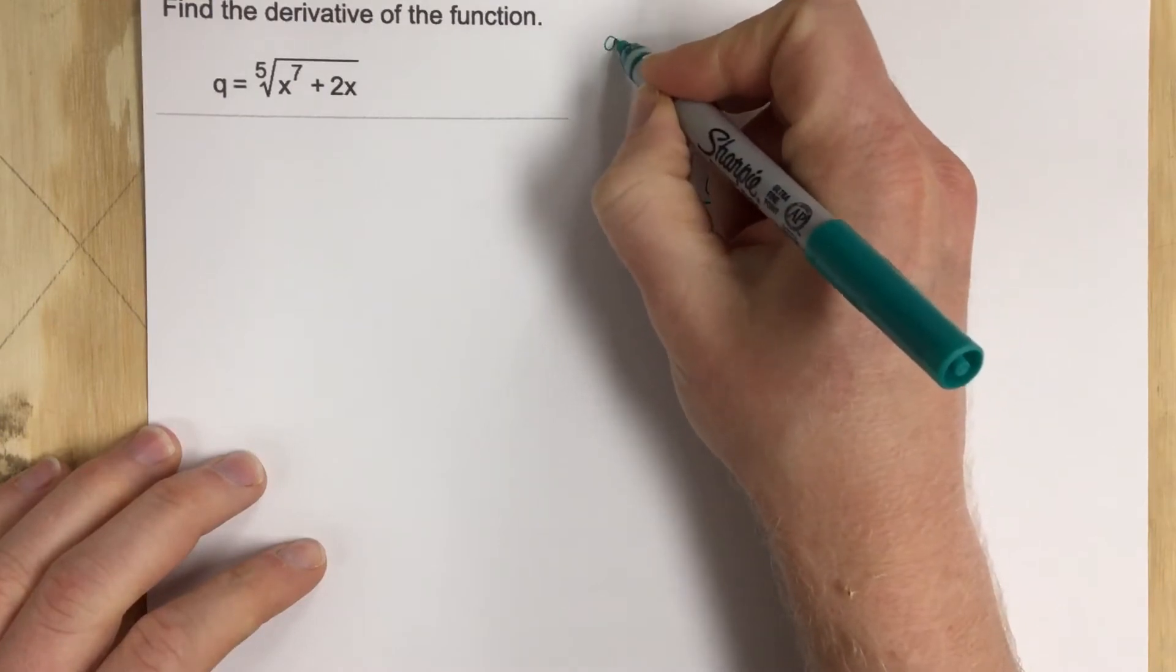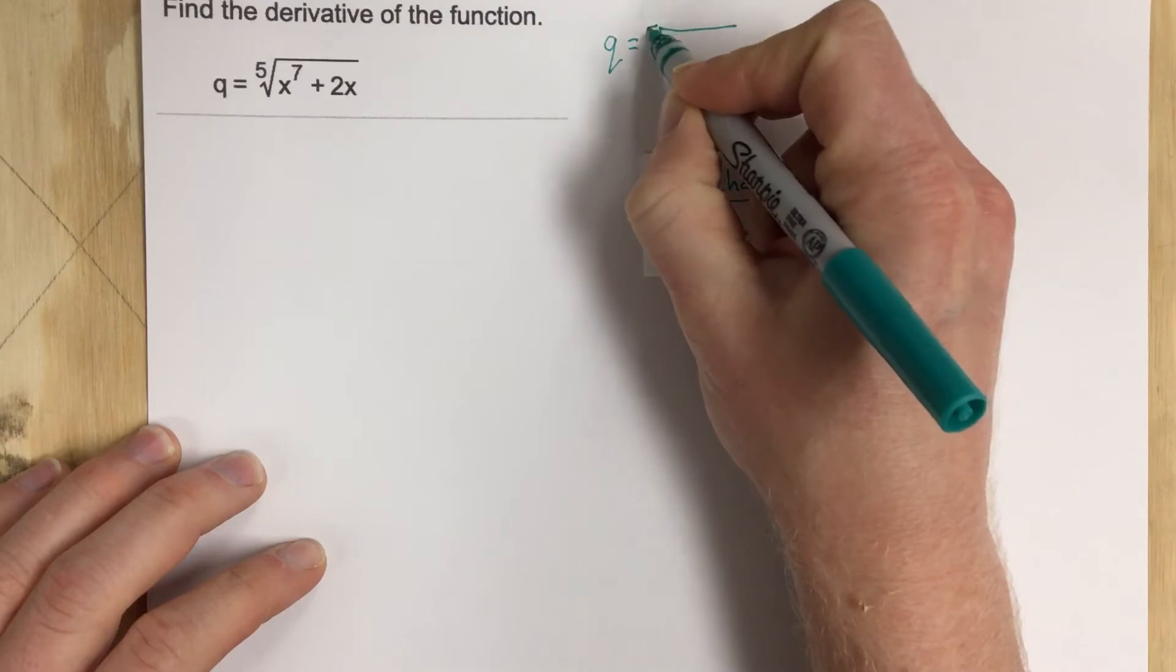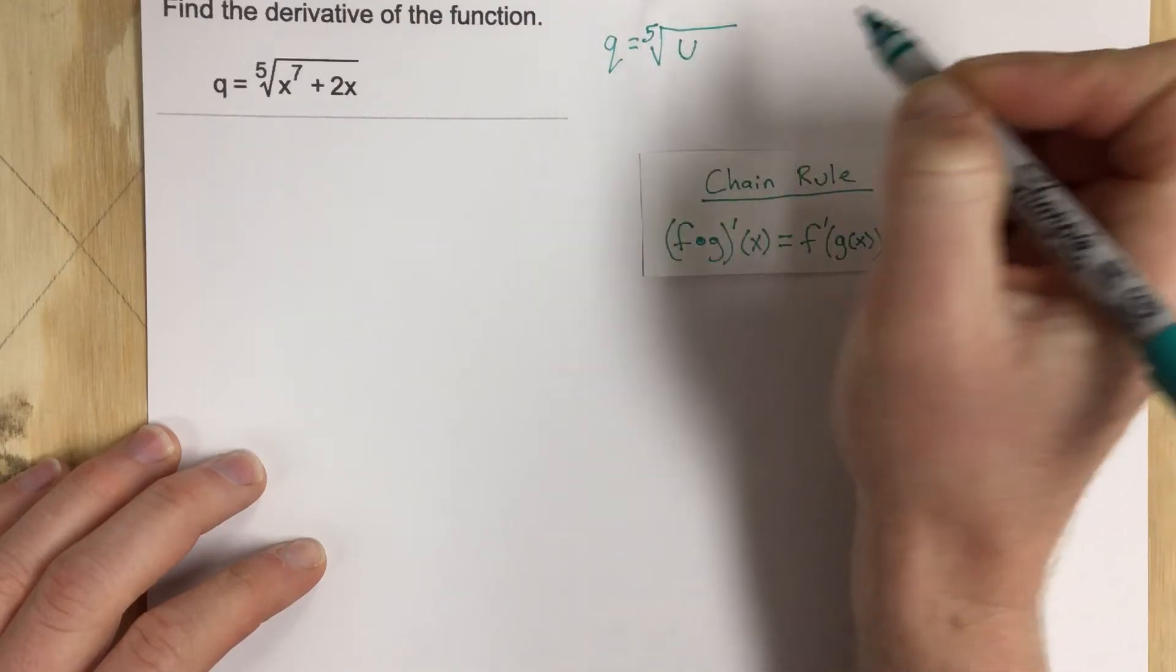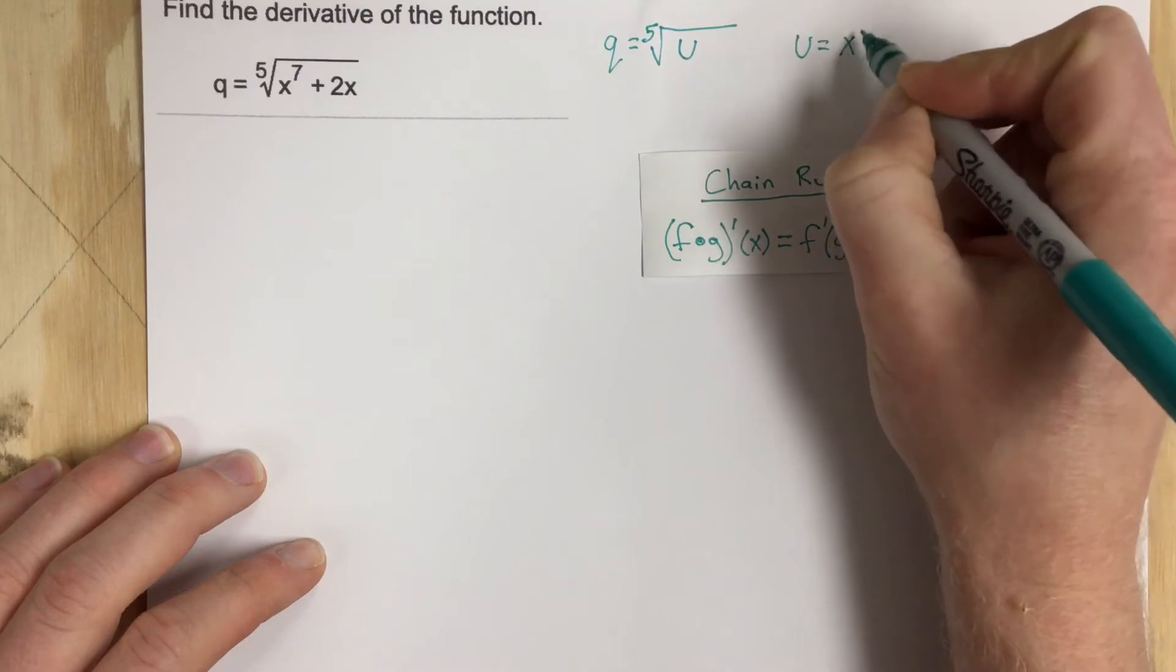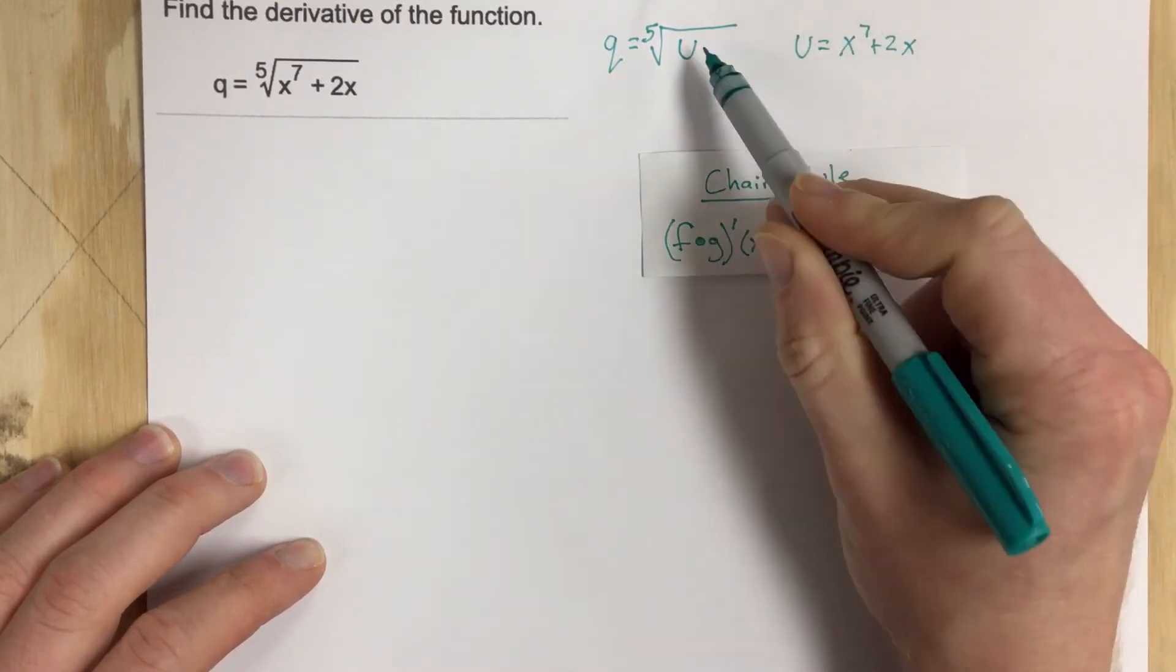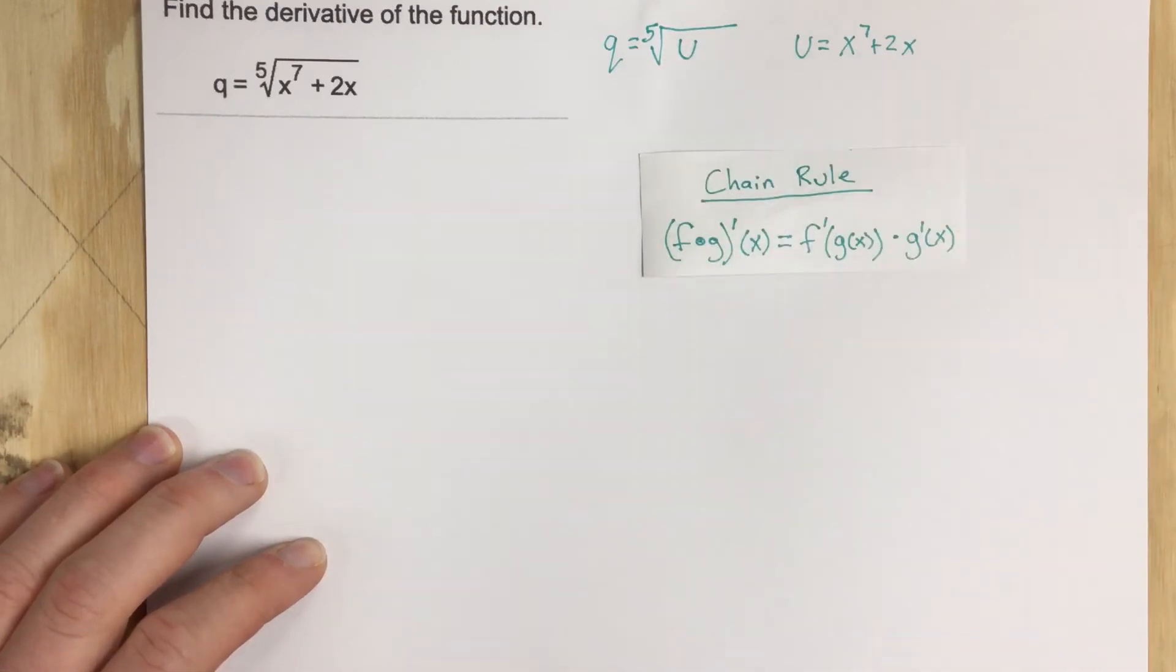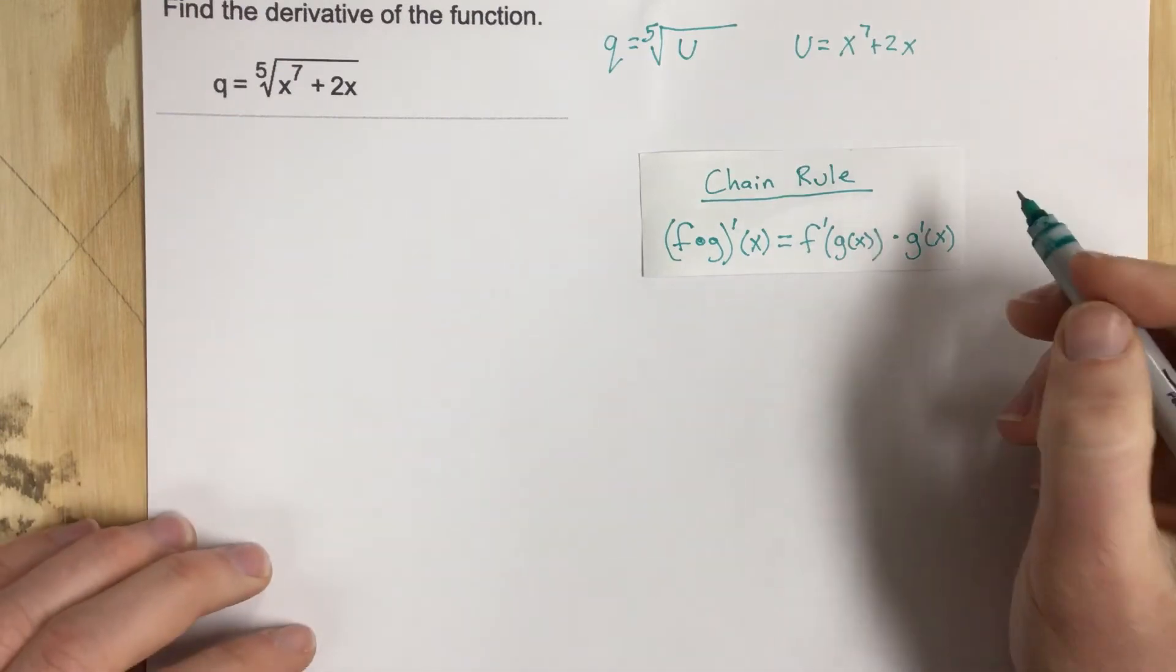So we have Q equal to the fifth root, we'll call it U, and then U is going to equal X to the seventh plus 2X. So you can see that this function has been plugged into this function here. So we have an outside function which is the fifth root of U and the inside function which is X to the seventh plus 2X.